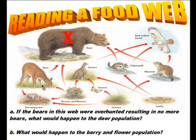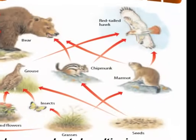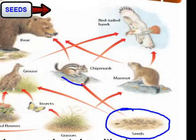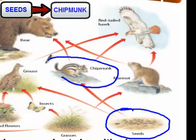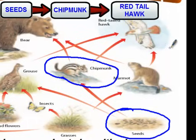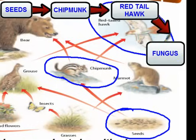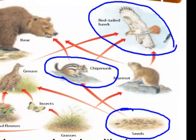Here's an example: we start with seeds as our producer. The energy from seeds flows into the chipmunk, which is our herbivore. Then the energy from the chipmunk flows to the red-tailed hawk — our carnivore. When the red-tailed hawk dies, the last link should be a decomposer, so we write fungus at the end. That's one example of a food chain.